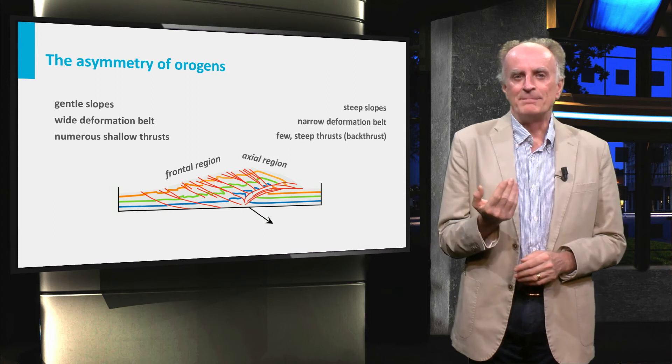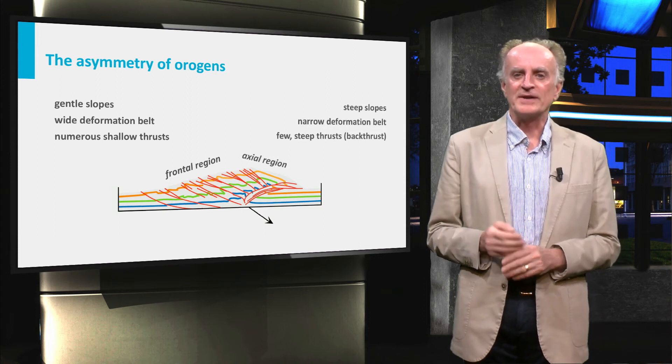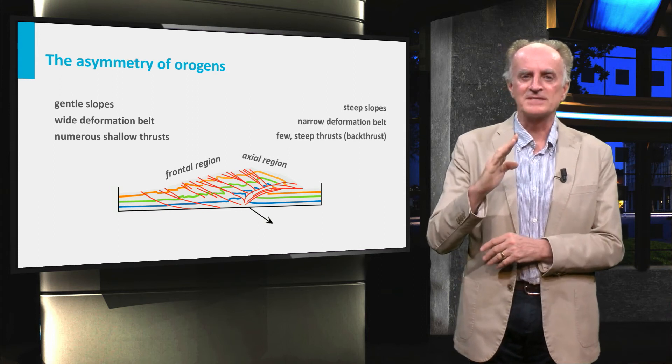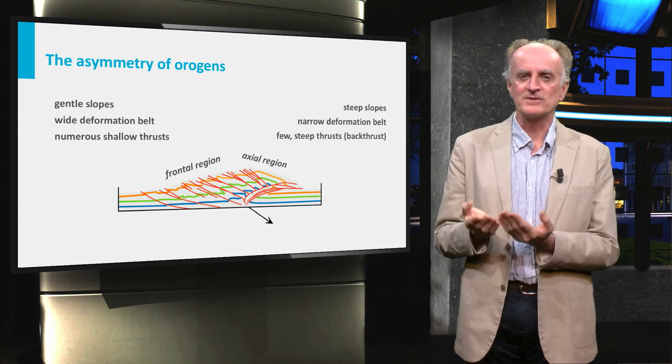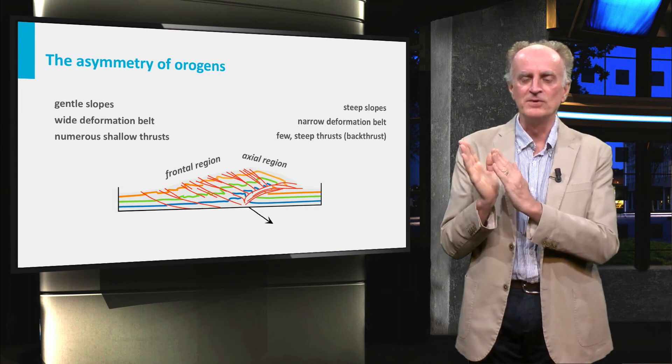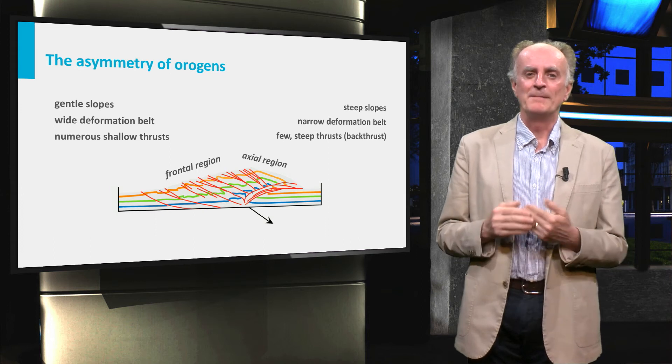The axial and the back part of the orogen on the contrary are narrow and have steep slopes. Most of the shortening is accommodated by a few steep faults called back thrusts.